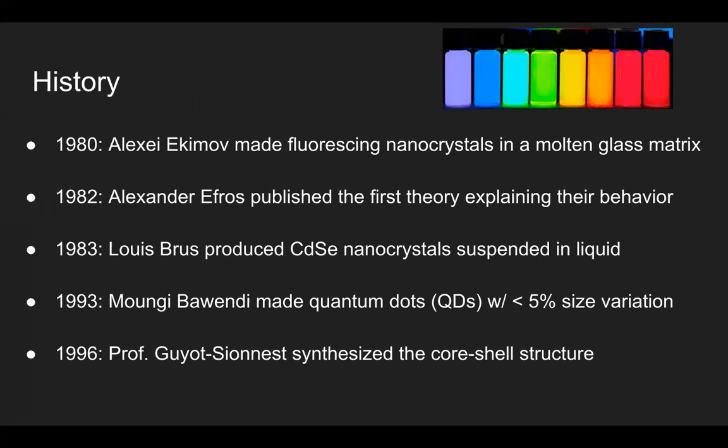Beginning with the history of quantum dots. Quantum dots first came about in 1980, when a Russian physicist by the name of Alexei Ekimov first made nanocrystals in a molten glass matrix. He noticed that these crystals were fluorescing, and he published his results. Two years later, another Russian physicist by the name of Alexander Efros first published a theory explaining this behavior in terms of electron confinement.